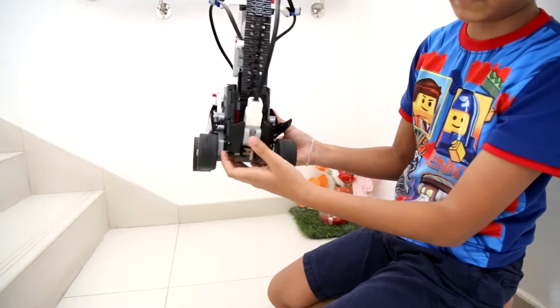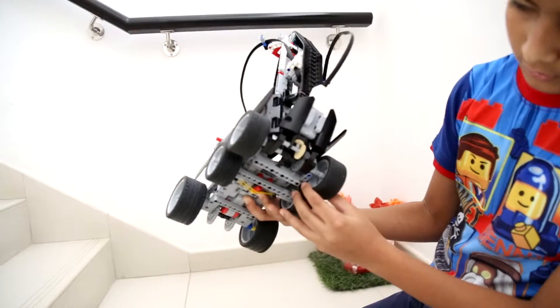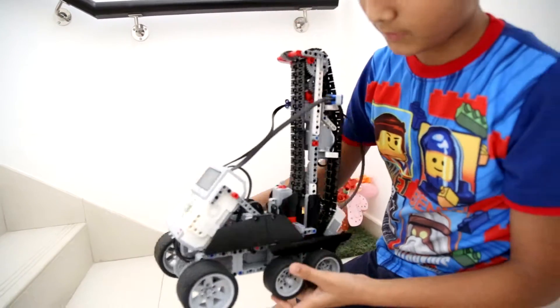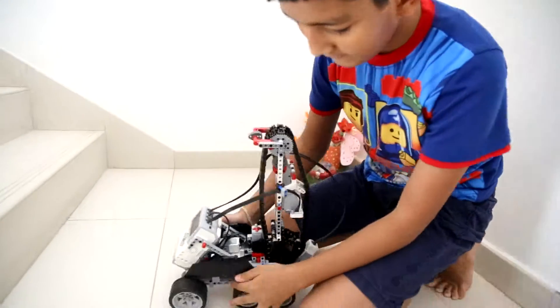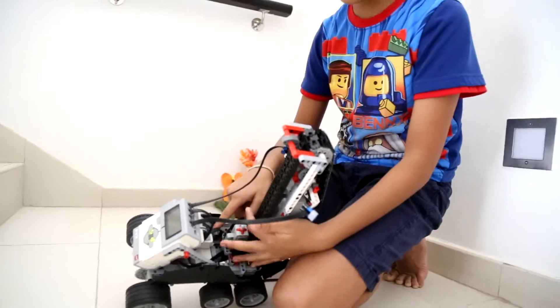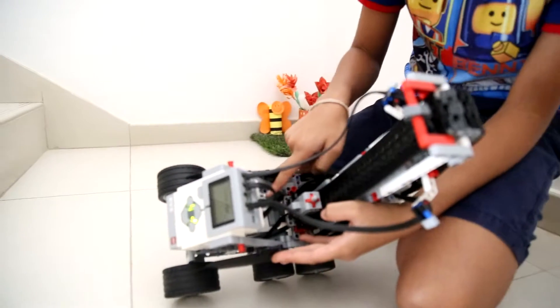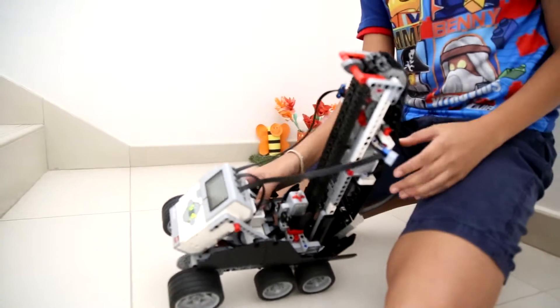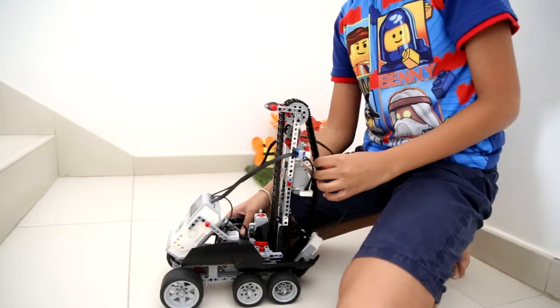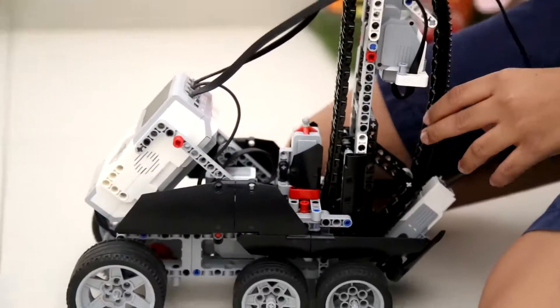And the back car is also done by the medium motor. The EV3 block is put in the front. There is a gyro sensor over here which controls all the angles of it so that it knows how many stairs to climb up.